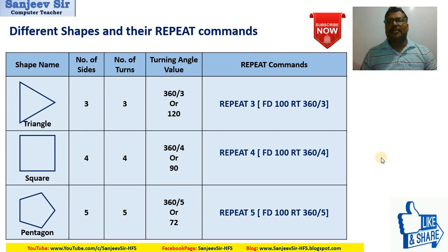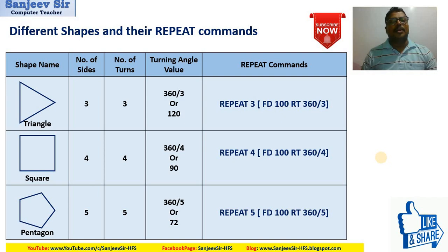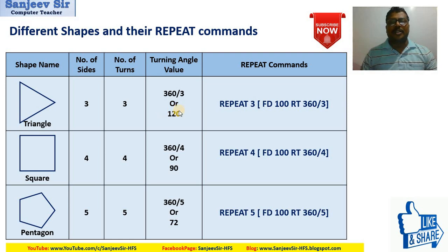Today we are here for discussing the Logo repeat command. Let's review what we discussed last time about different shapes and how to use the repeat command. For a triangle, the number of sides is three, so it will rotate three times. That's 360 divided by 3, so your computer will evaluate 120 automatically. We write repeat 3 here.